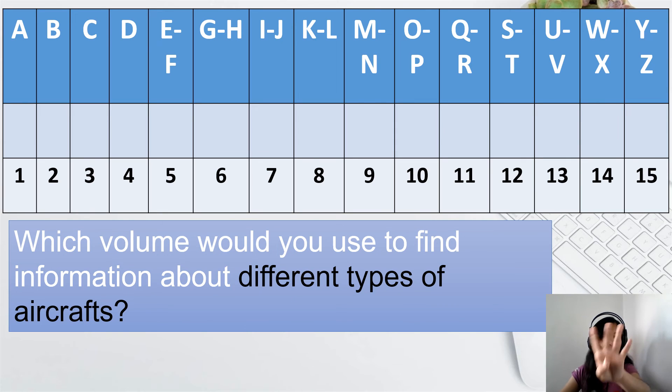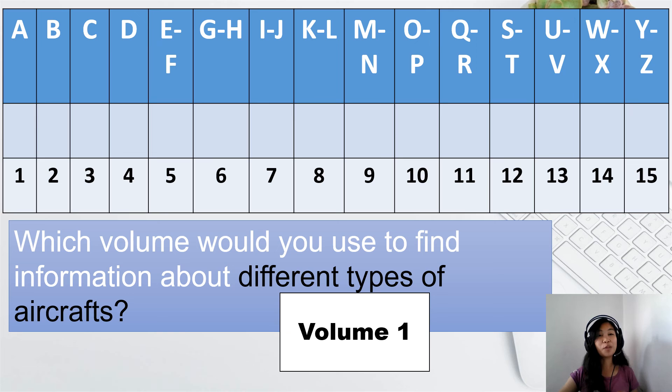How about number 4? Which volume would you use to find information about different types of aircrafts? What is the most important word in this context? Very good. Aircrafts. So what will be the volume number? Correct. It's in volume number 1. Why? Because aircrafts start with letter A.